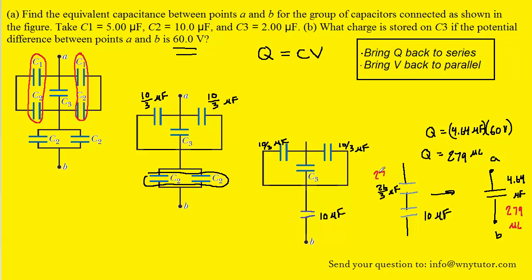We label the charge on each of those two capacitors. What we don't know is the potential difference, but that's easy to calculate: the potential difference is simply the charge divided by the capacitance. For the first capacitor, dividing the charge by its capacitance gives a potential difference of about 32.1 volts. For the second capacitor, dividing the charge by its capacitance gives about 27.9 volts.